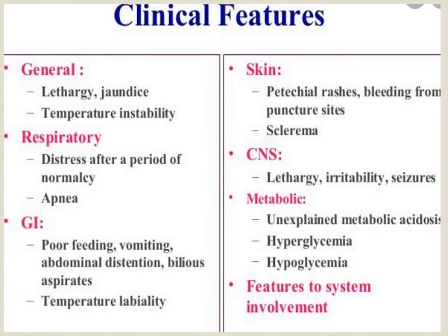Clinical features of neonatal sepsis include lethargy, jaundice, and temperature instability — either hypothermia or hyperthermia. Respiratory features include respiratory distress after a period of normal breathing and apnea. GI features include poor feeding, vomiting, abdominal distension, and bilious aspirates. Integumentary features include petechial rash, bleeding from puncture sites, and signs of DIC. CNS features include lethargy, irritability, seizures, and depressed neonatal reflexes. Metabolically, unexplained metabolic acidosis, hypoglycemia, and hyperglycemia can all occur.